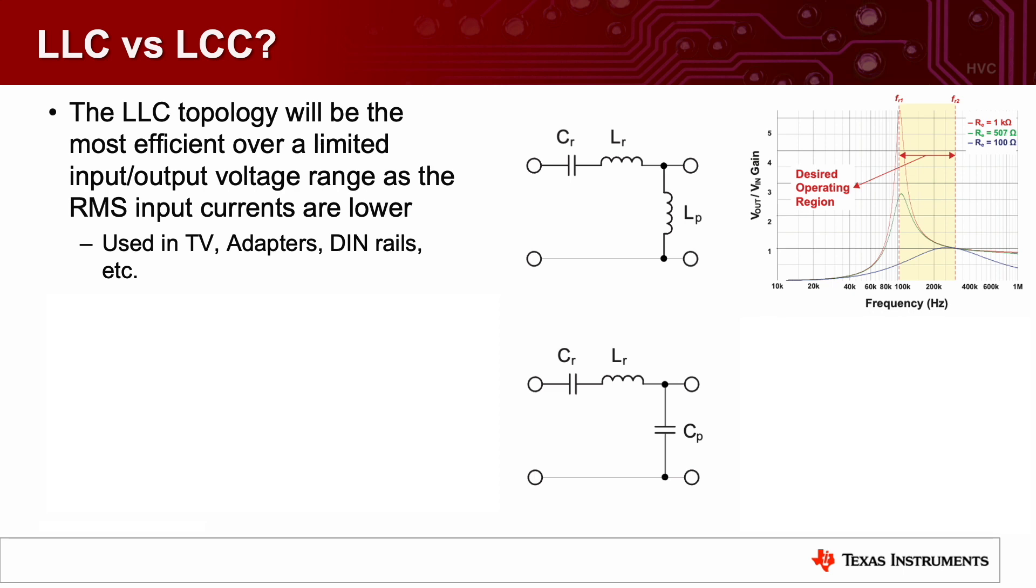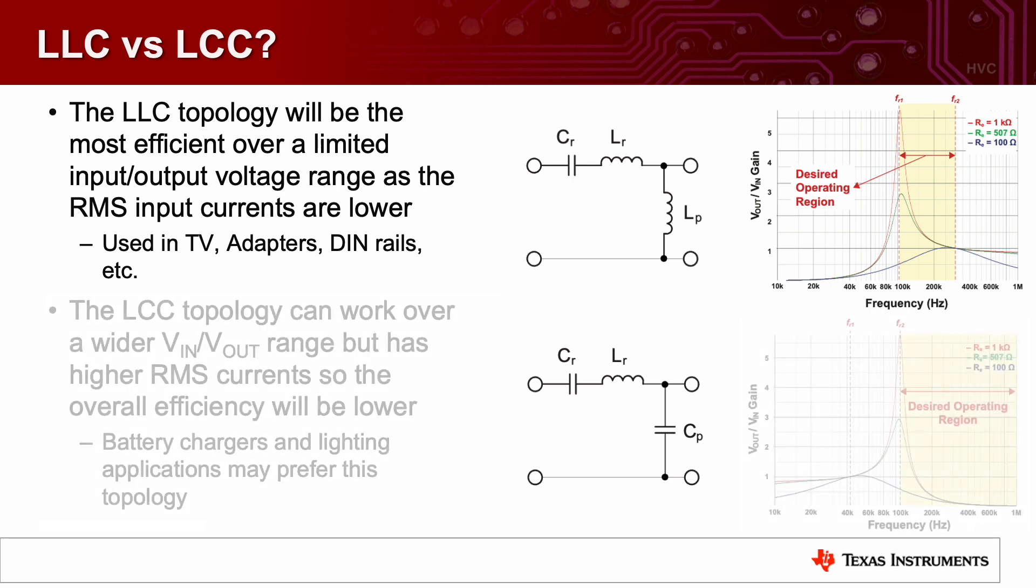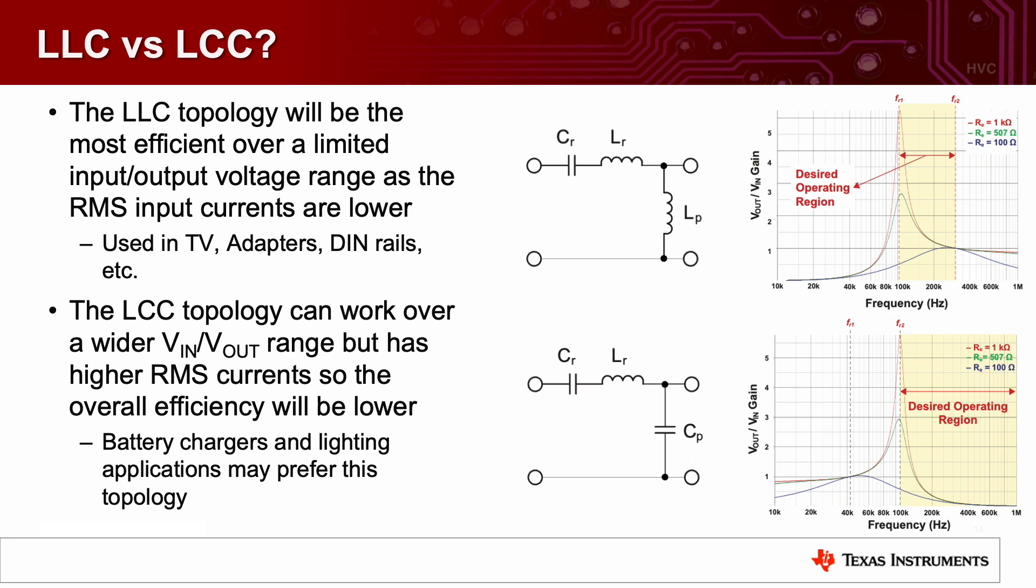The LLC topology will be most efficient over a limited input-output voltage range. As the RMS input currents are lower, this is typically used in TV adapters, DIN rails, etc. The LCC topology is optimized to work over a much wider VIN-VOUT range, but it has higher RMS currents in the input, so the overall efficiency will be lower. This is typically used in battery chargers and lighting, as they prefer this topology because they need the wider output support.